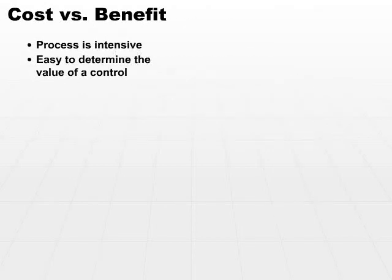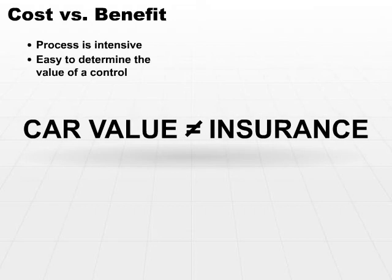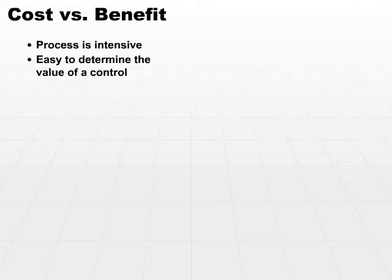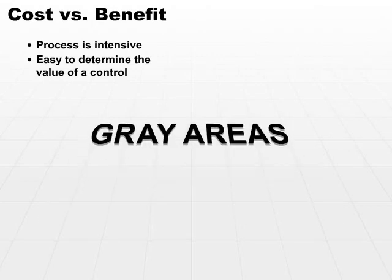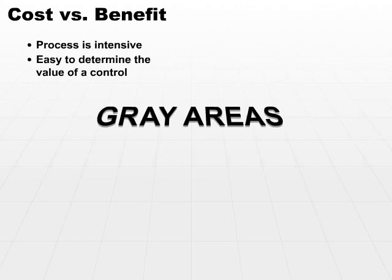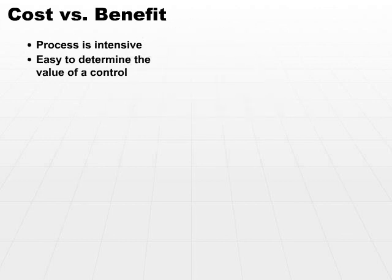Another analogy: going back to car insurance. If you have a car worth $500, you don't want to be spending $650 a month in insurance for that $500 car. Now, there are other issues in this analogy — obviously we're buying more than just replacement value of the car; we're buying liability insurance for accidents. Those are the kind of gray areas you have to be careful about. When defining the cost-effectiveness of a control, make sure you look at more than just what you're protecting yourself from. Consider all the other issues.